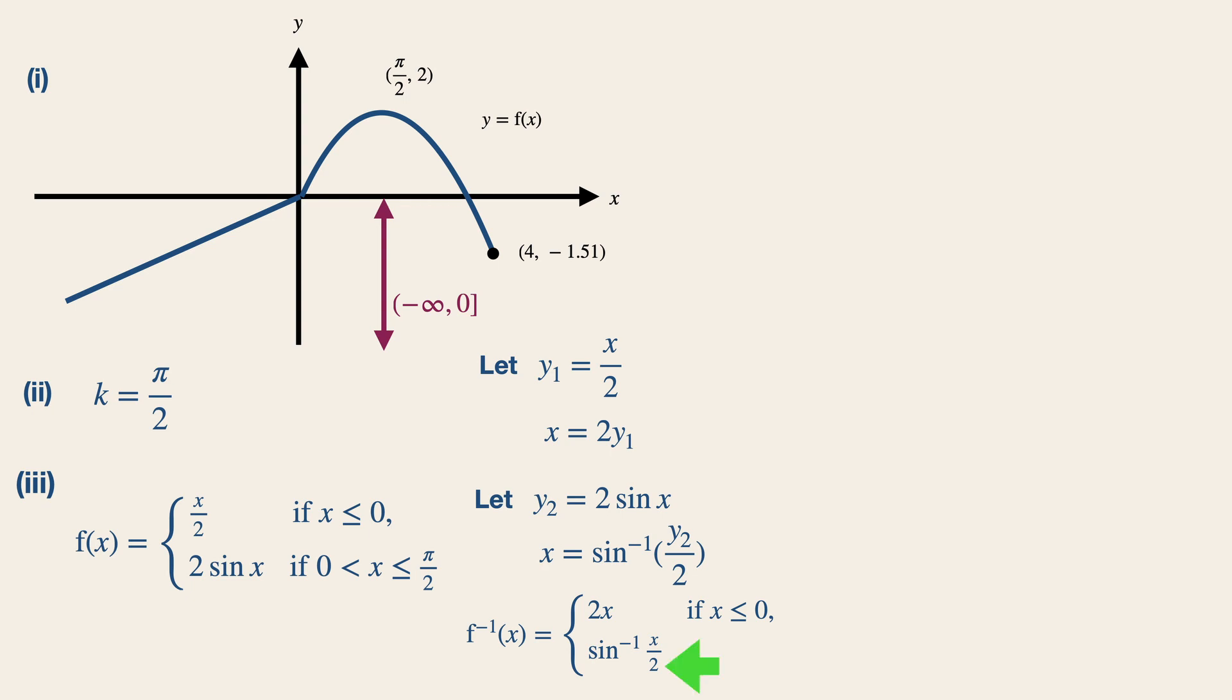Now the domain for the sin inverse x over 2, be very careful over here, is the range of the original function, which is from 0 less than x and less than equals to 2. Now remember to include the less than equal sign over here, since this is also reflected in the original statement. Make sure that you have answered to the question, and actually you have already defined f inverse in similar form.